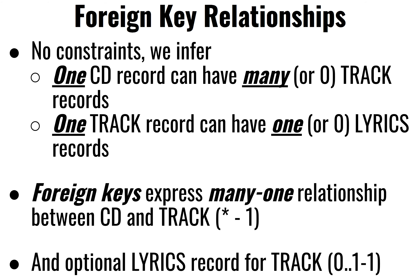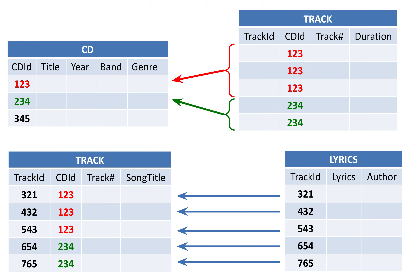One CD record can have many tracks — that's the one-to-many relationship we already have. A track could have zero lyrics, and a lyric that does not refer to a track is also possible. Foreign keys typically represent a one-to-many relationship, but when a foreign key is also a primary key, it establishes an optional one-to-one relationship — there could be no lyrics record, but if there is one, it's the only lyric for that track.